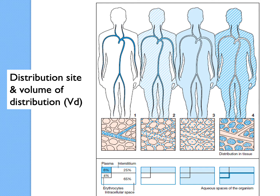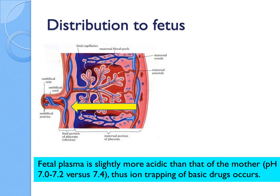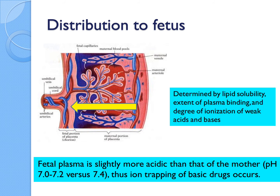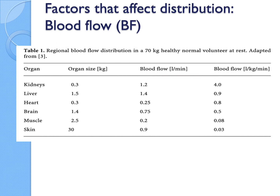There is also distribution to the fetus. The fetal blood is slightly more acidic than the mother's — fetal pH is about 7.0–7.2 versus the mother's 7.4. Based on the Henderson-Hasselbalch equation, basic drugs tend to accumulate in the fetal blood due to this pH difference, a phenomenon called ion trapping. This means the baby may be more exposed to the drug, and lipid solubility also influences how much drug accumulates in the fetus.